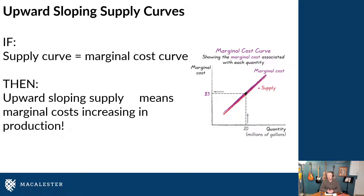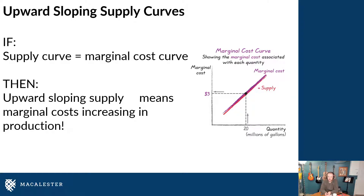Otherwise, you would have a flat marginal cost function. So if every single unit of a good that you sell costs the exact same, you would have a flat marginal cost and therefore supply function. And if for some reason the more you produce your costs actually decreased, you would have a decreasing supply function. Most of the time, when we look at different markets, we find that they either have a flat marginal cost function or an increasing one. So let's talk about two different reasons why we think that a lot of markets have an increasing marginal cost and therefore supply function.